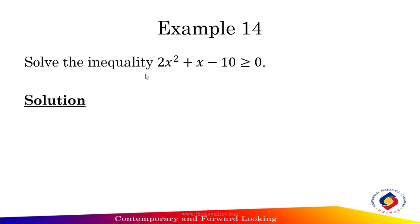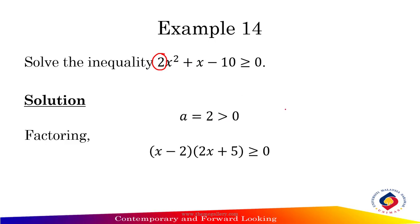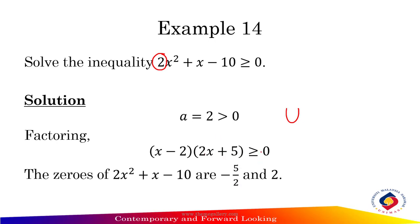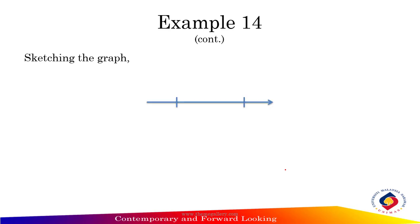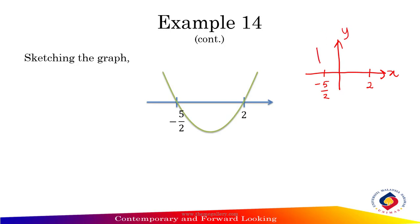Example 14: Solve the inequality 2x² + x - 10 ≥ 0. Here a = 2, the coefficient of x², and since 2 > 0, this is a smiling graph. Factoring gives (x - 2)(2x + 5) ≥ 0. The zeros are -5/2 and 2. Sketch the graph with the y and x-axis, estimate -5/2 and x = 2, and draw the smiling graph.